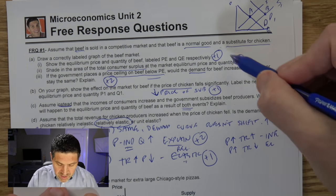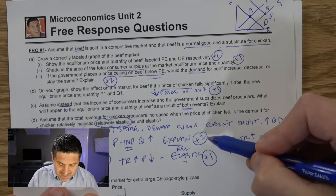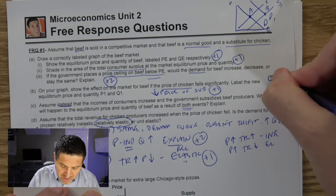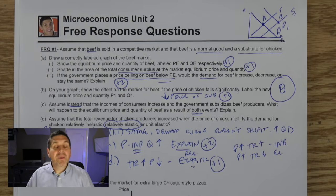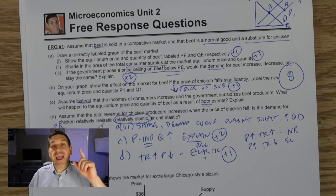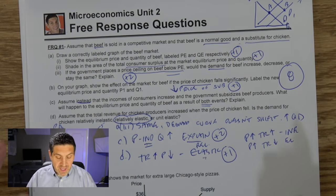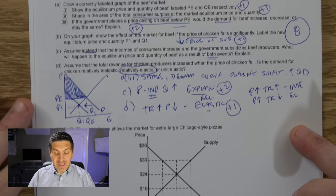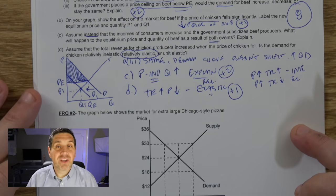Let's add up the points: one, two, three, four, five, six, seven, eight — eight points total. How did you do? I hope you did well and I hope you're ready for a harder free response. Free response number two is a lot trickier because it requires more calculations.